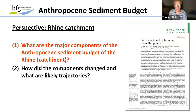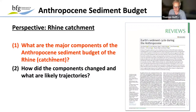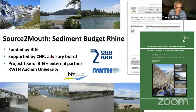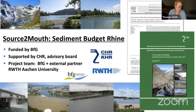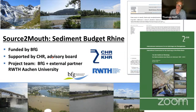From this introduction, I'd like to present two studies. The first question: what are the major components of the Anthropocene sediment budget of the Rhine? The second: how did these components change and what are likely trajectories? The sediment budget was studied by the Federal Institute of Hydrology in cooperation with the Commission on the Hydrology of the Rhine and the University of Aachen. We published a paper in Earth Science Reviews and a detailed report in German.